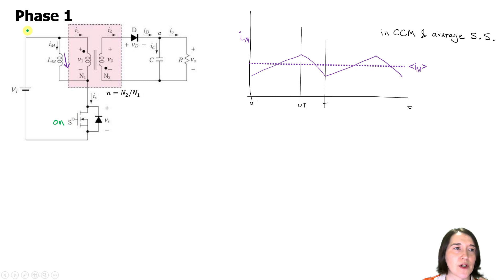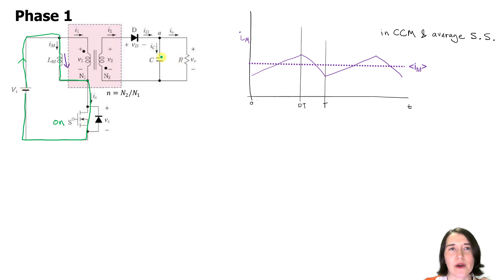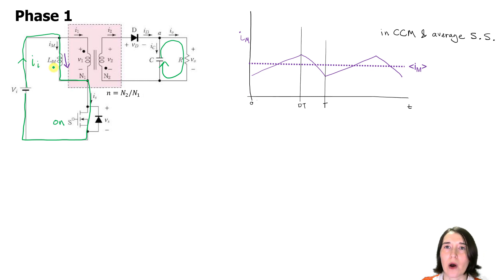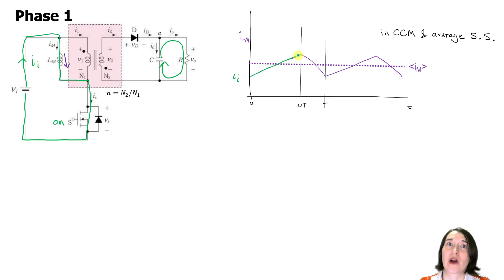In phase one, we have current coming from the power supply, going through the inductor, through the switch, and back around. We also have current coming from the capacitor to the load. The input current i_in is exactly the same as the magnetizing current during the switch-on part — it follows the rising ramp — but then after the switch turns off it drops to zero and stays there until the end of the period, then goes back up again.